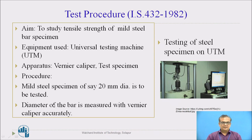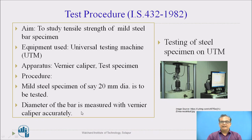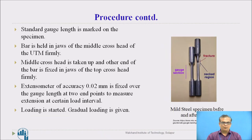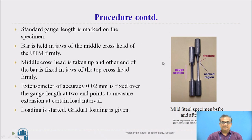Procedure. A mild steel specimen of, say, 20 mm diameter is to be tested. The diameter of this bar is measured accurately with a vernier caliper — measurement of diameter of the specimen is important. Standard gauge length is then marked on the specimen. IS code gives the standard gauge length, and accordingly the gauge length should be marked. It is 5.65 times the square root of the cross-section area of the bar.